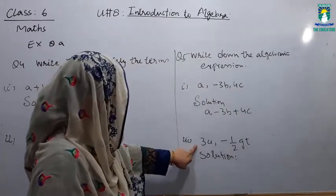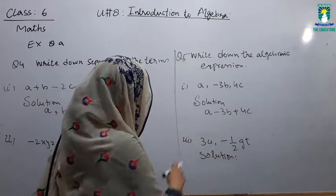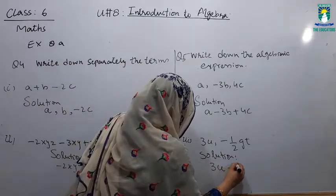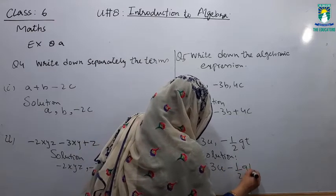Now, if you look at this expression, it has one term which is 3u and one term is minus half gt. What will be the expression? 3u minus half gt. What will be the word term?